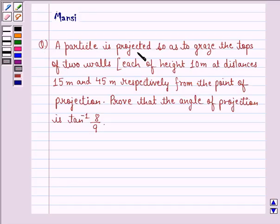The question says a particle is projected so as to graze the tops of two walls, each of height 10 meters at distances 15 meters and 45 meters respectively from the point of projection.